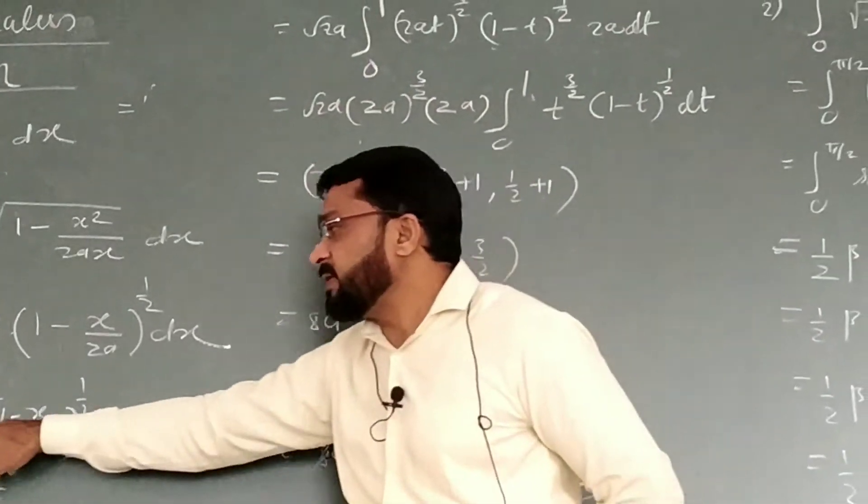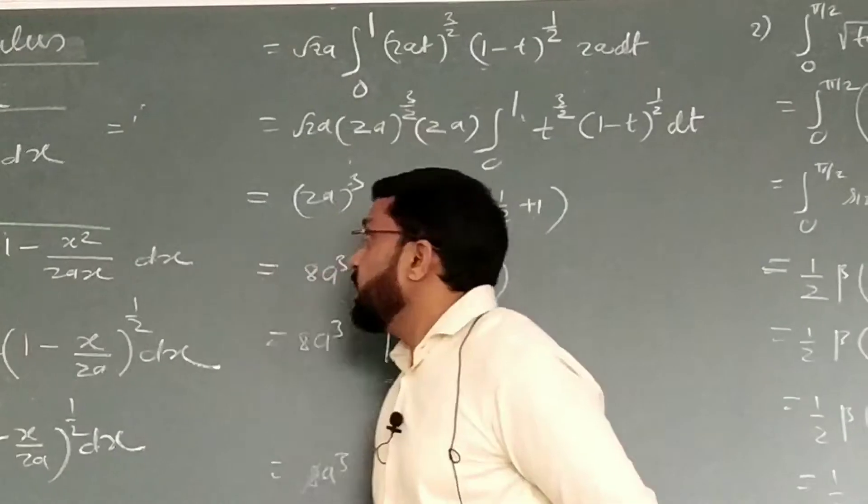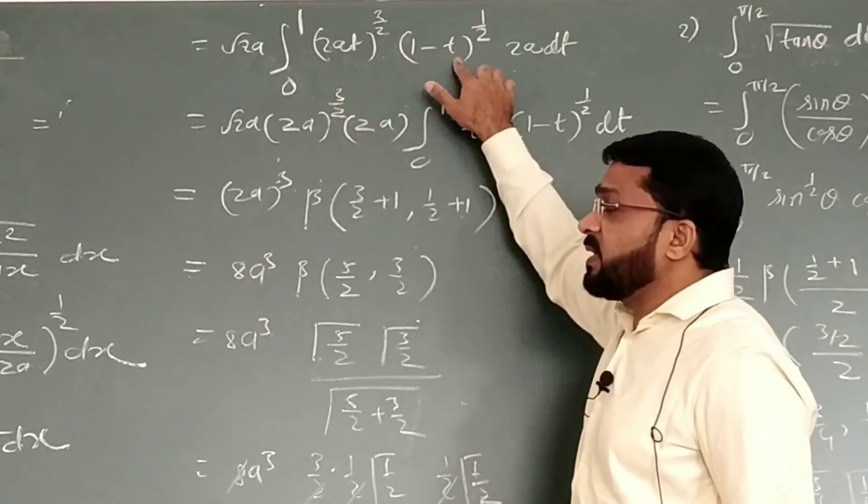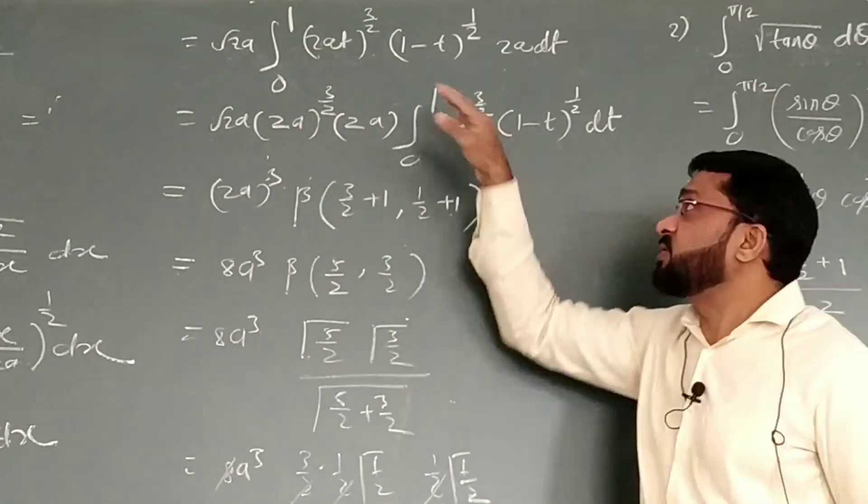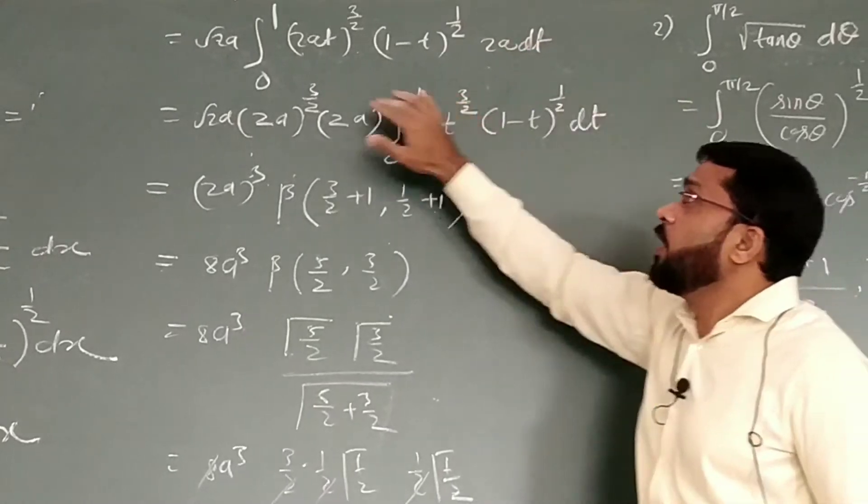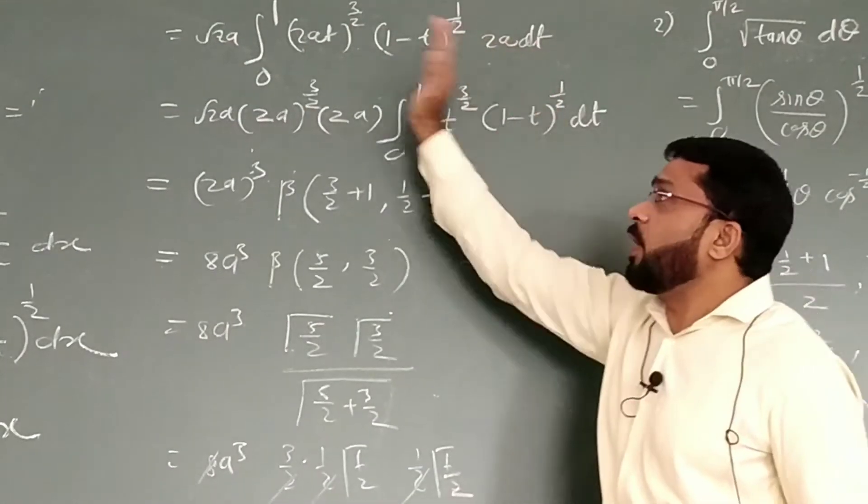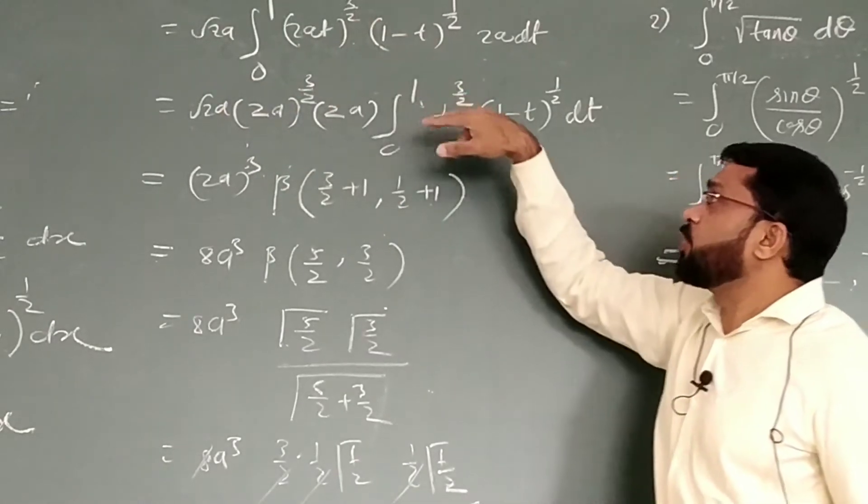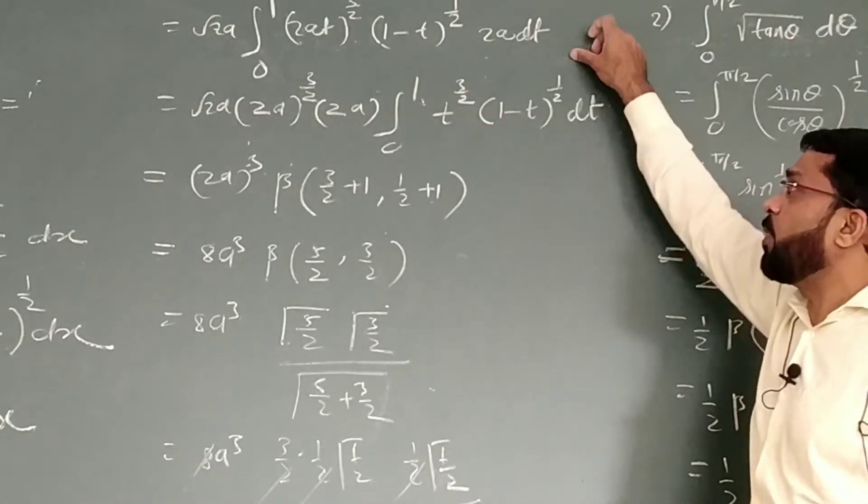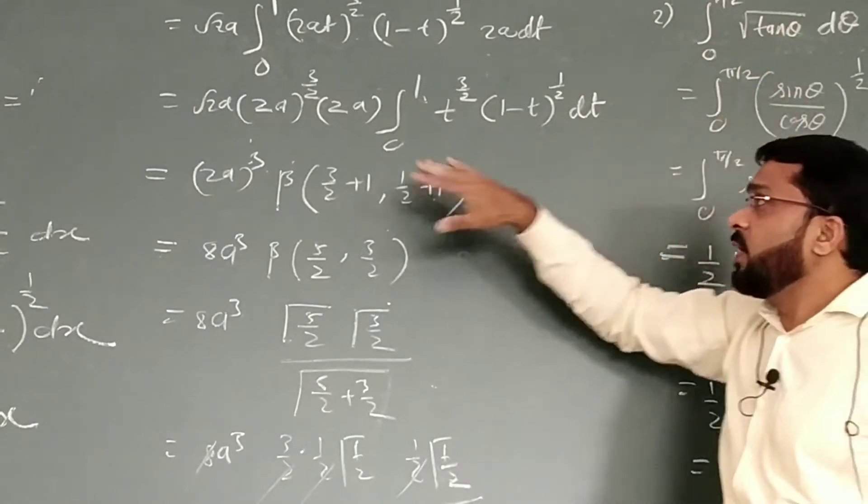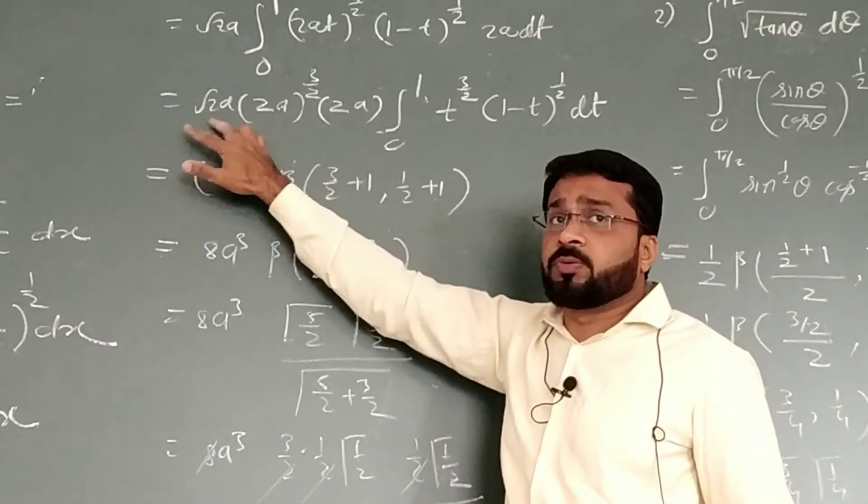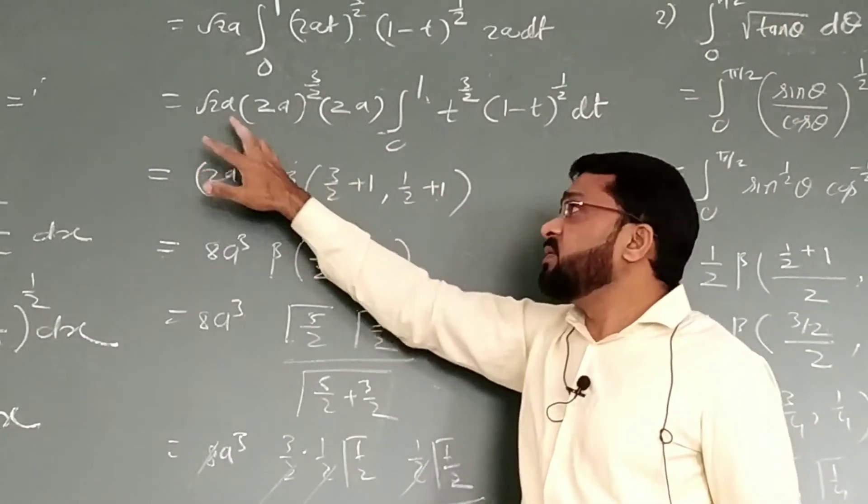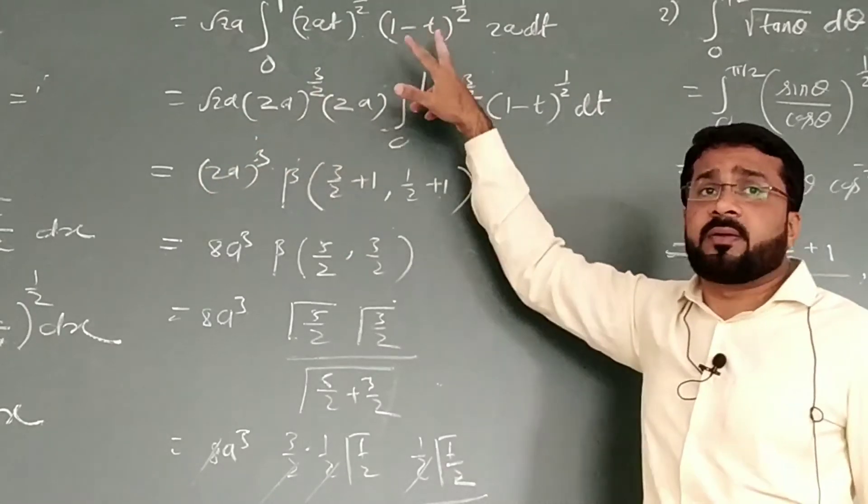Integral 0 to 1. What is x? x is 2at. We put that. Then 1 minus t, x by 2a we have taken as t, to the power half and 2a dt. 2a to the power 3/2 and this 2a, we take outside of the integral sign. Integral 0 to 1, what is left? t raise to the power 3/2, 1 minus t raise to the power 1/2. Now, simplify this quantity.